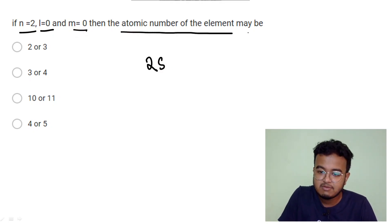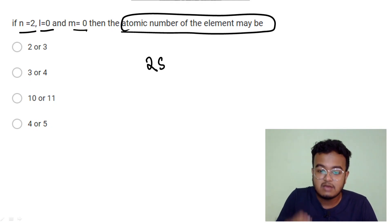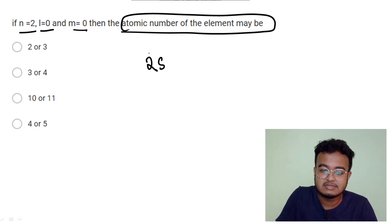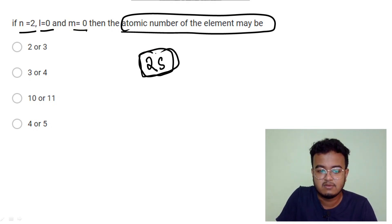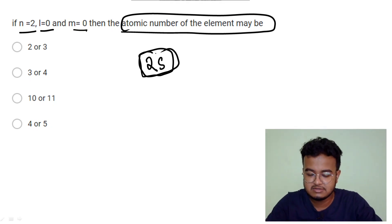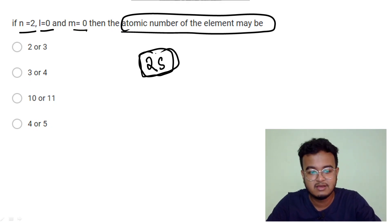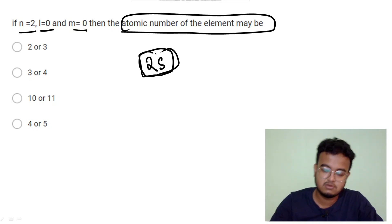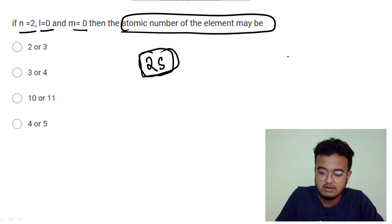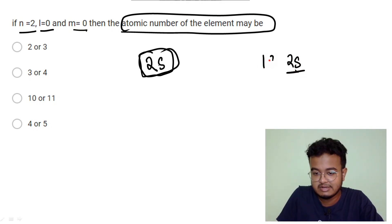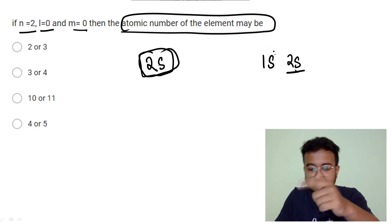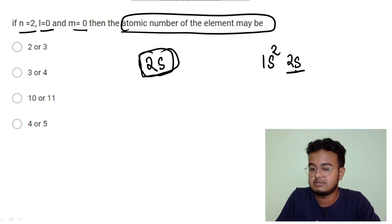Then the atomic number of an element may be determined from its electronic configuration. We have this element: its configuration starts with 1s², 2s², filling up progressively. The last shell is 2s — this gives us the atomic number of the element.